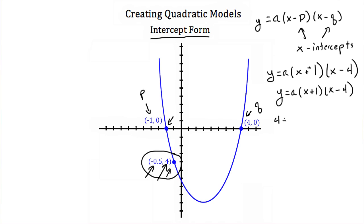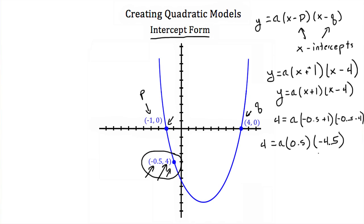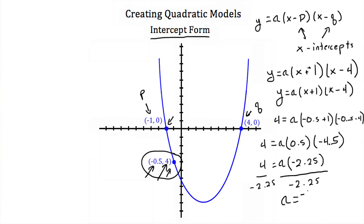So our y is 4, and our x is negative 0.5. So we have 4 is equal to a times negative 0.5 plus 1 times negative 0.5 minus 4. If we simplify that, negative 0.5 plus 1 is a positive 0.5, and negative 0.5 minus 4 would be negative 4.5. If I multiply negative 4.5 and 0.5, I get negative 2.25. So 4 is equal to a times negative 2.25. Next I'm going to divide both sides by negative 2.25, and we get a is equal to negative 16 ninths, or approximately negative 1.778.